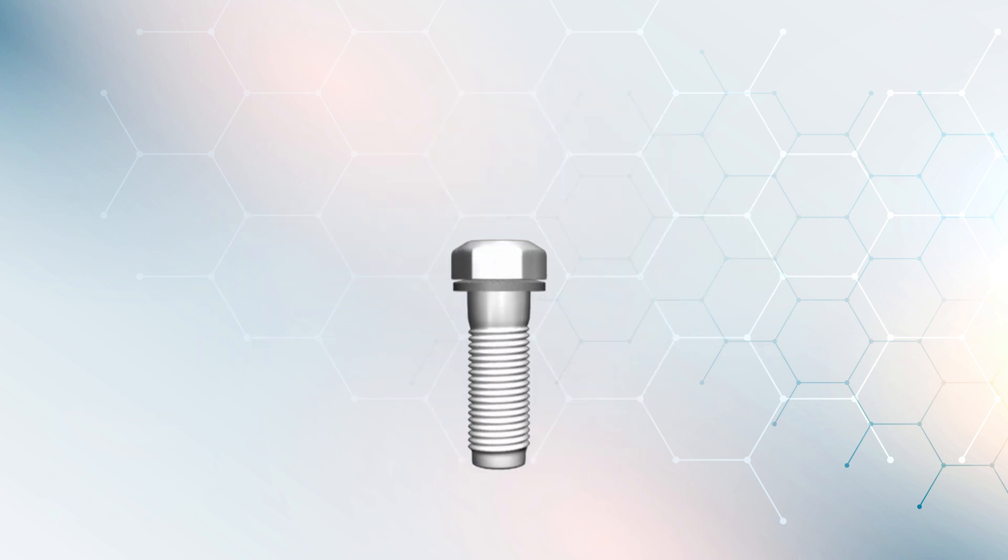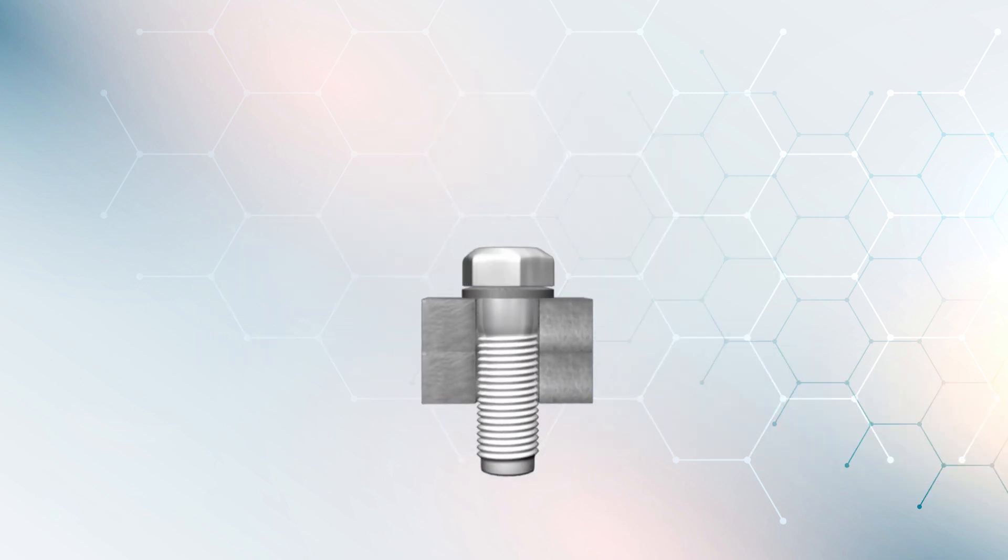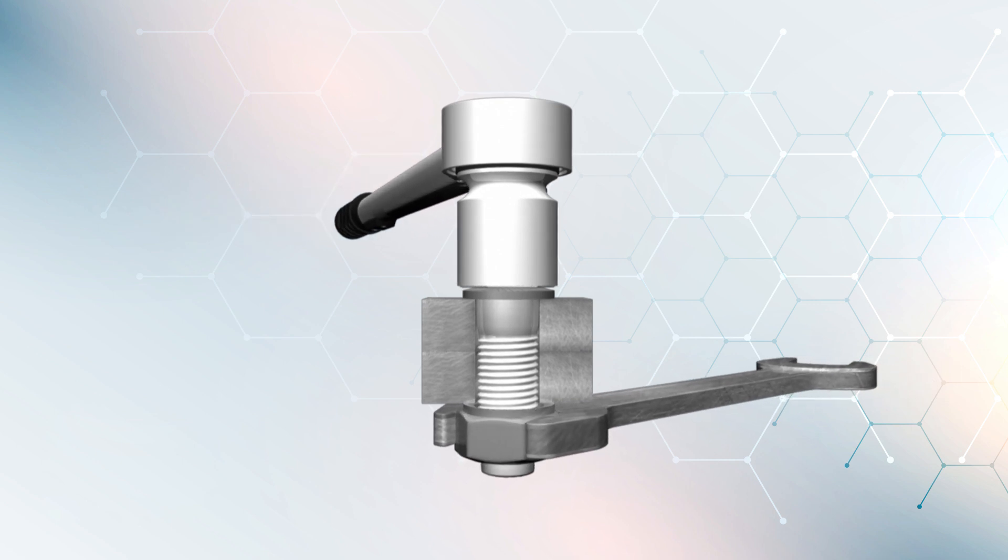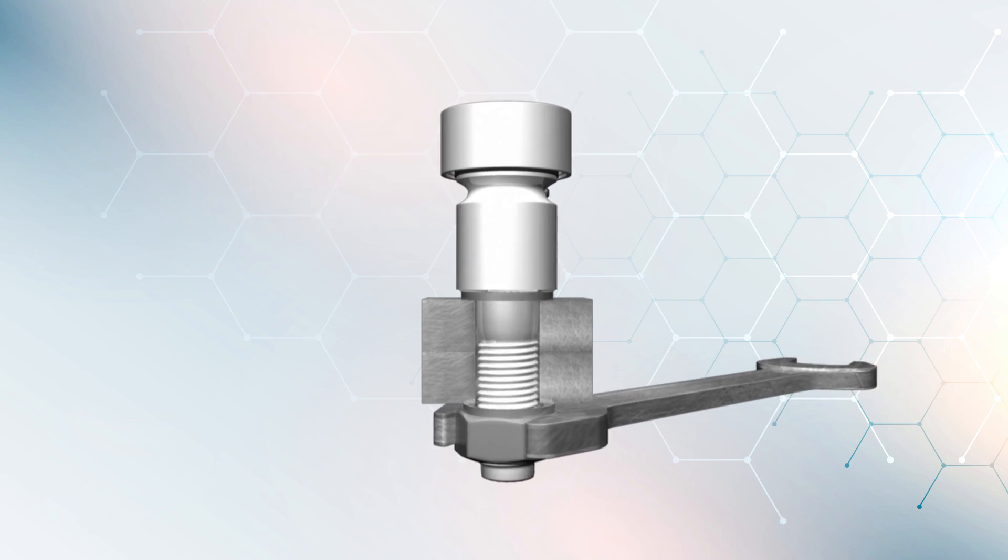Thanks to the unique design of the Schnorr safety washer, your bolted joint is reliably secured against loosening by force and positive locking. When used correctly, the serration digs into both the lower head of the bolt and the surface of the bolt counterpart, thus ensuring positive locking of the bolted joint.